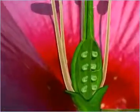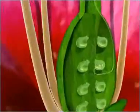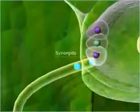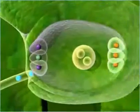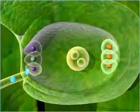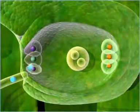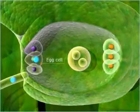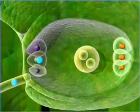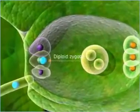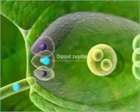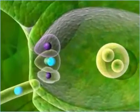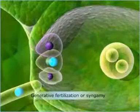After the pollen tube enters the ovule, it discharges the two sperms it carries into the synergids of the embryo sac. This causes the synergid cells to rupture, leading to the fusion of one sperm cell with the egg cell or oosphere. Due to this fusion, a diploid zygote results, which gives rise to an embryo. This process is known as generative fertilization or syngamy.